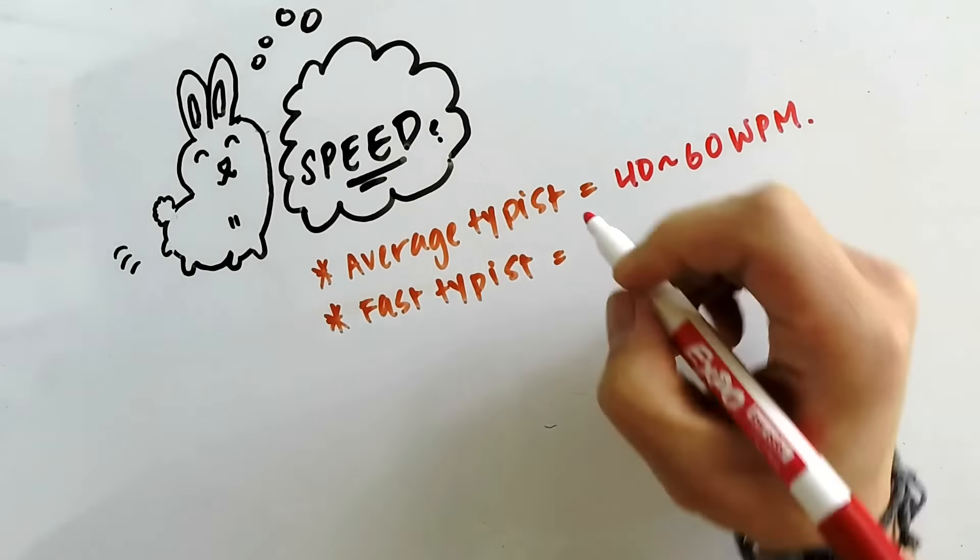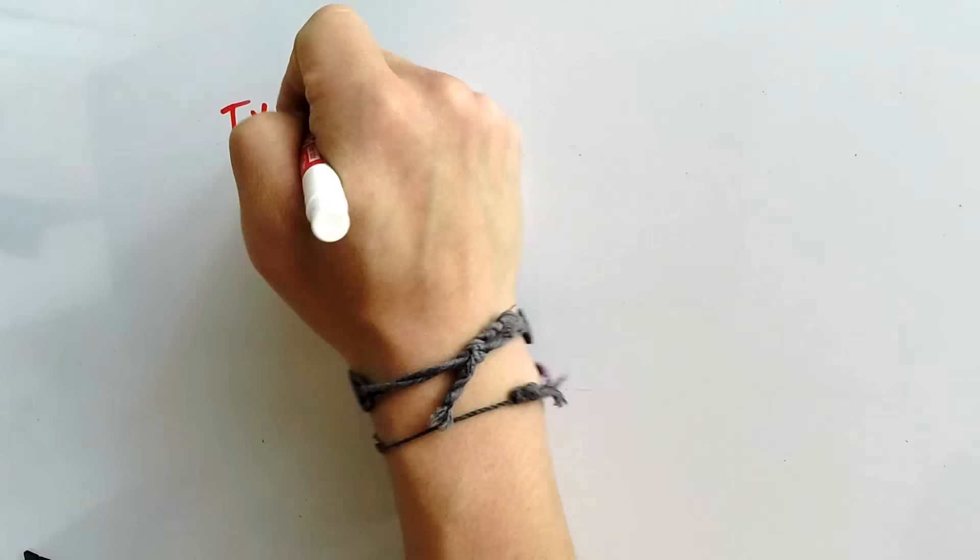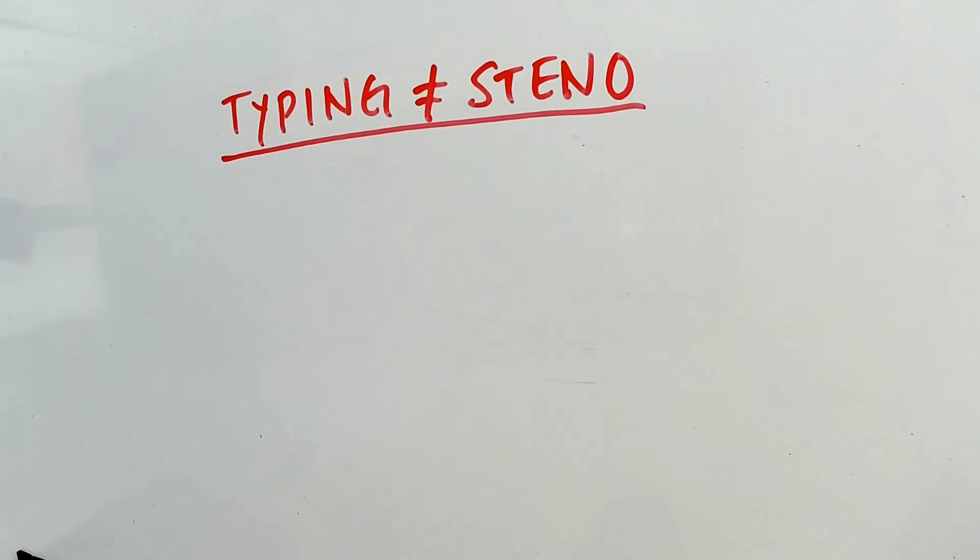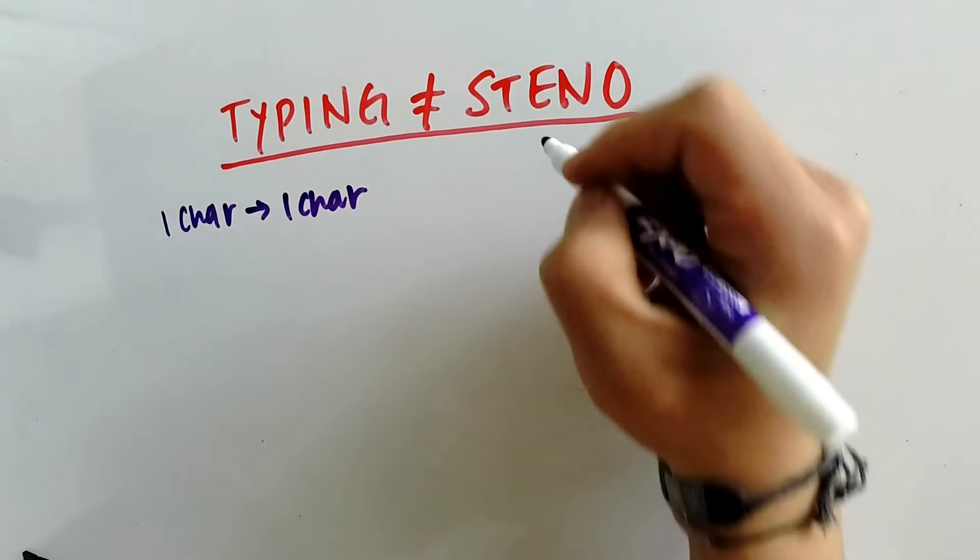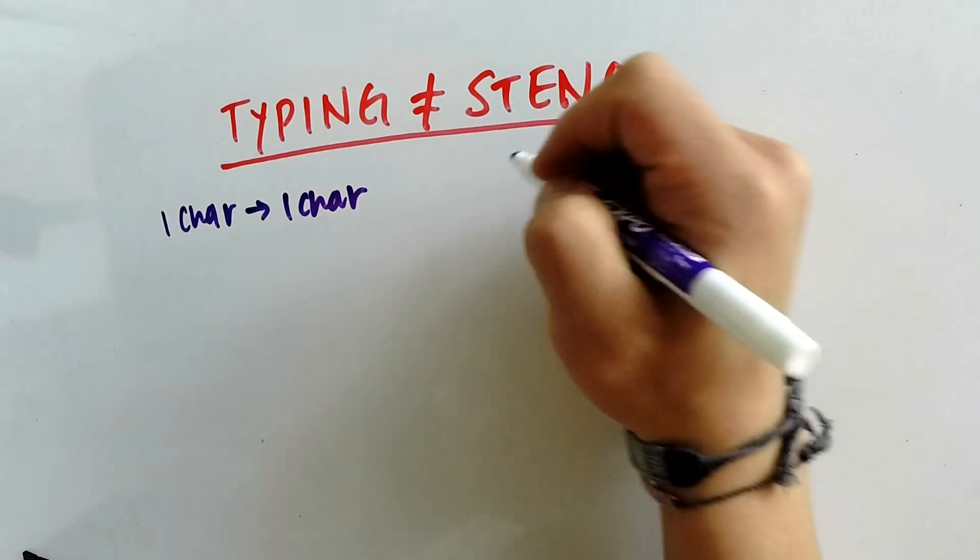So why exactly is steno so much faster than QWERTY? Let's get one thing straight: steno is not typing. Typing is when you get one character of output per one press of the keyboard, whereas in steno, you press multiple keys at the same time to make a steno outline, which must then go through a translation process to produce readable text. This is why court reporters call the act writing and not typing.